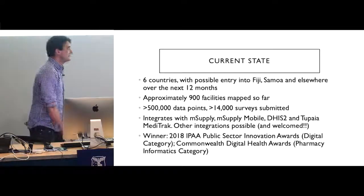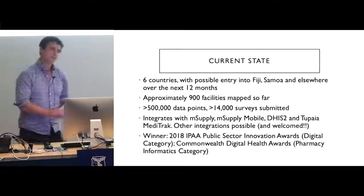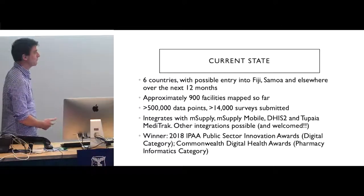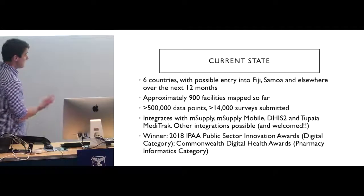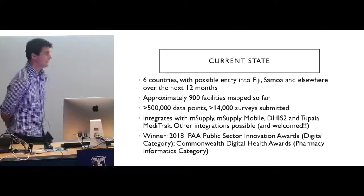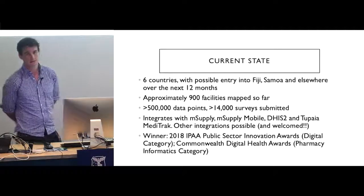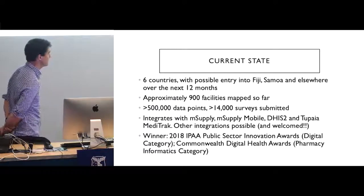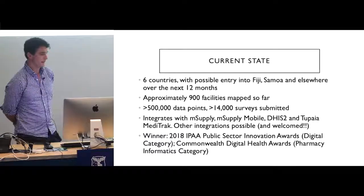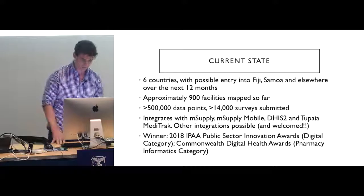This is our current state. It's in six countries at the moment: Kiribati, Solomon Islands, Vanuatu, Tonga, Cook Islands, and Tokelau. It's mapped approximately 900 health facilities so far and we've had 14,000 surveys submitted through the app. We also collect data from other sources, primarily MSupply, MSupply Mobile, and DHIS2 for those who work in health systems.